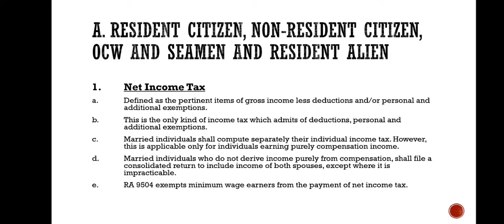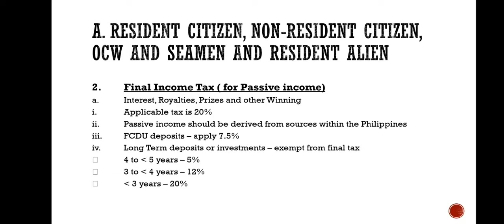The resident citizen is the only individual taxpayer liable for income derived from all sources within and without the Philippines. The net income tax is defined as the pertinent items of gross income less deductions and personal and additional exemptions. This is the only kind of income tax which admits of deductions, personal and additional exemptions. Married individuals shall compute separately their individual income tax, applicable only for those earning purely compensation income. RA 9504 exempts minimum wage earners from the payment of net income tax. For final income tax on passive income, it includes interest, royalties, prizes, and other winnings; the applicable tax is 20%. For FCDU deposits, apply 7.5%. Long-term deposits or investments are exempt from final tax.